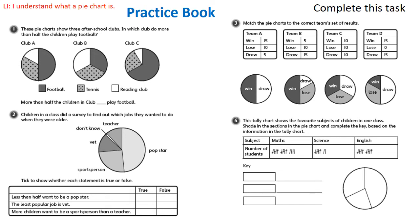Children in a class, this is number two, children in a class did a survey to find out which jobs they wanted to do when they were older. So you can see from here, some wanted to be a teacher, some wanted to be a pop star, some wanted to be a sports person, others wanted to be a vet, and a few didn't know. So then you have to decide whether these statements are true or false. Less than half wanted to be a pop star. So what I want you to think about is where is half if we were to draw a line?